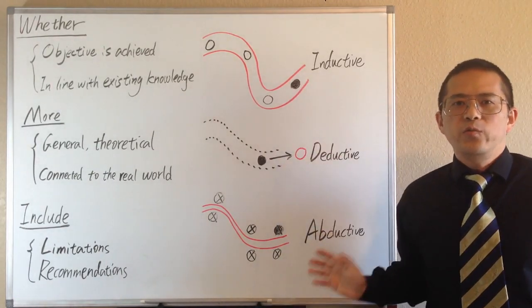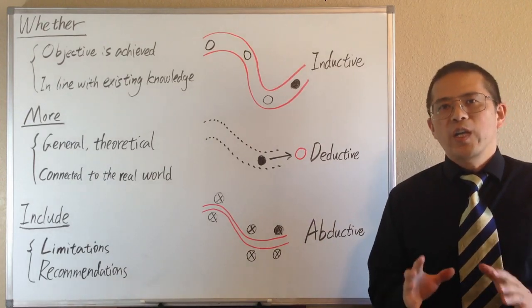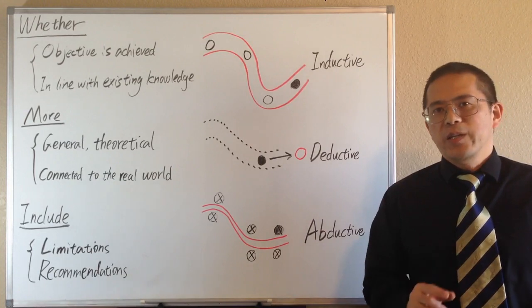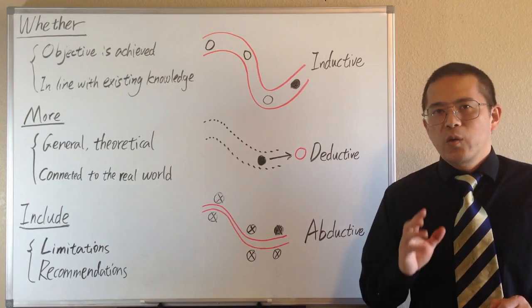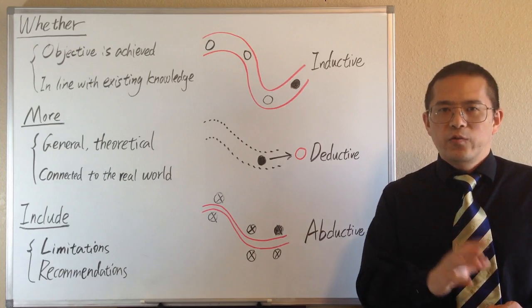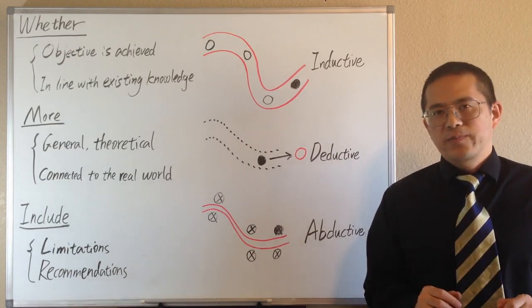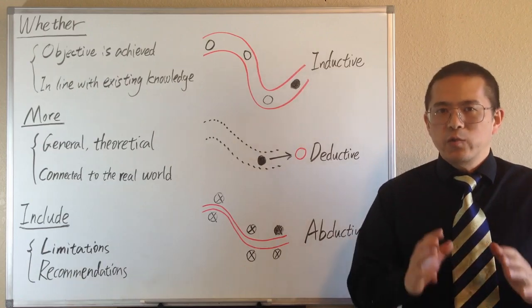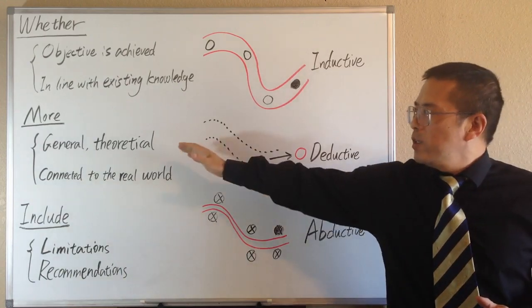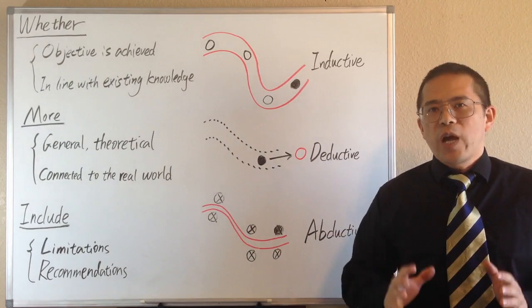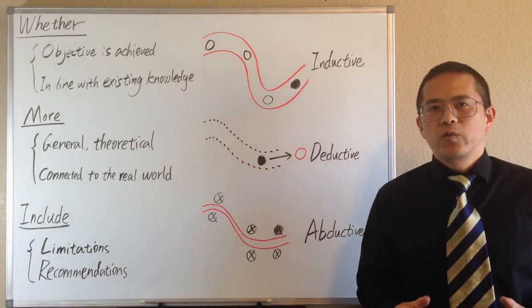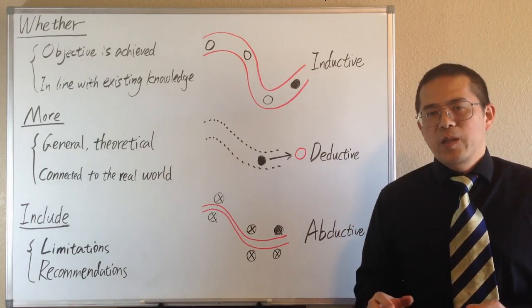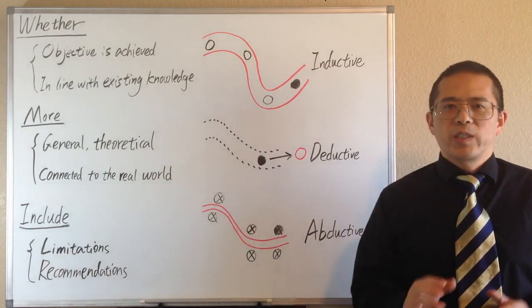These three reasoning methods can be used alone or in combination to draw conclusions. And typically, in the conclusion, we can move in two directions from the results. First, we can move from specific results to a more general theory, which is right opposite to what we should do in the introduction or the literature review section, where we move from general to specific.